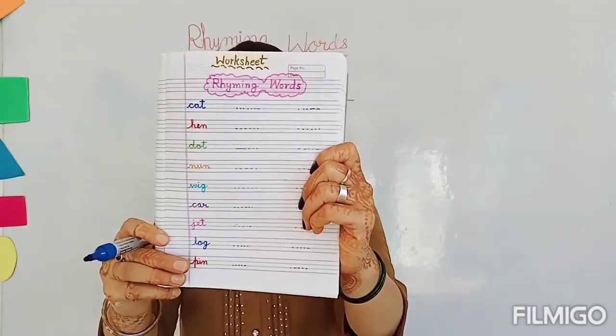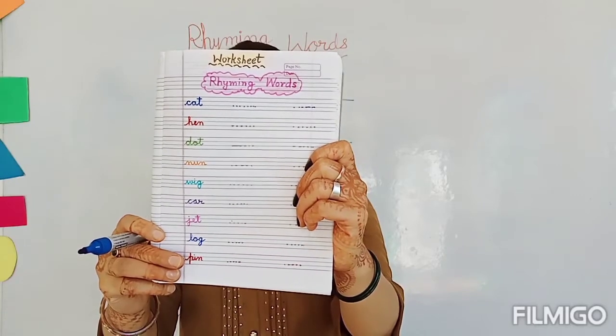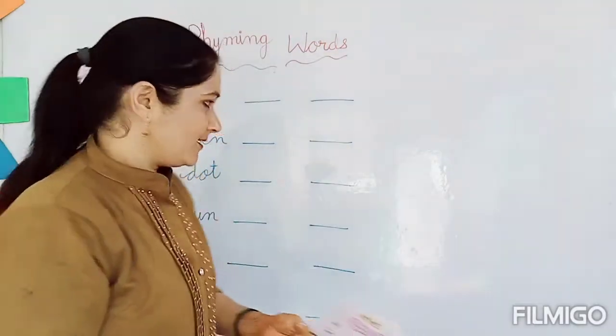Rhyming words means more than two or more than two words see their ending sound. Okay? So let's start.